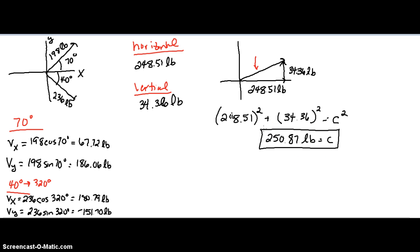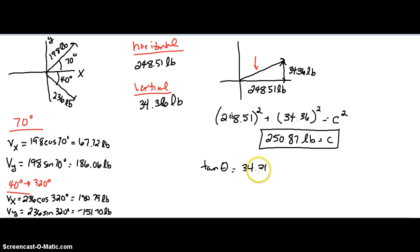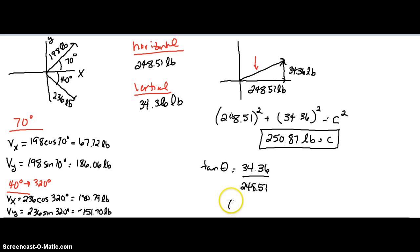Now if I want to find the actual angle at which this equilibrium force is applied, I use tangent of theta equals 34.36 divided by 248.51. Dividing that out and taking the arc tangent gives theta equal to 7.87 degrees.